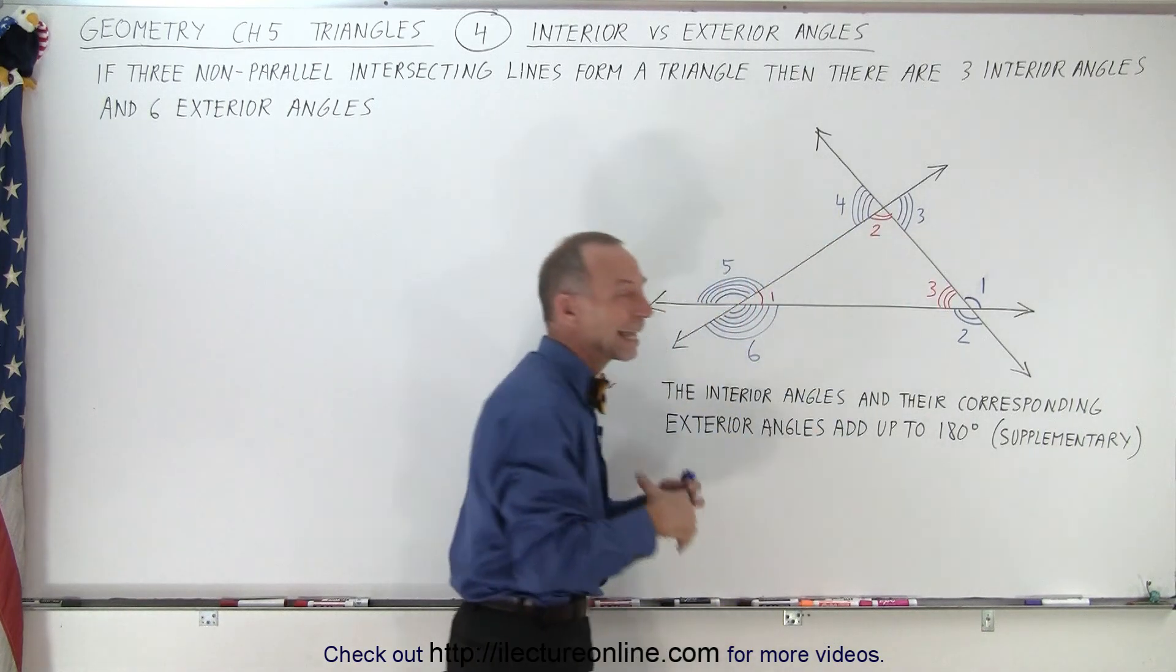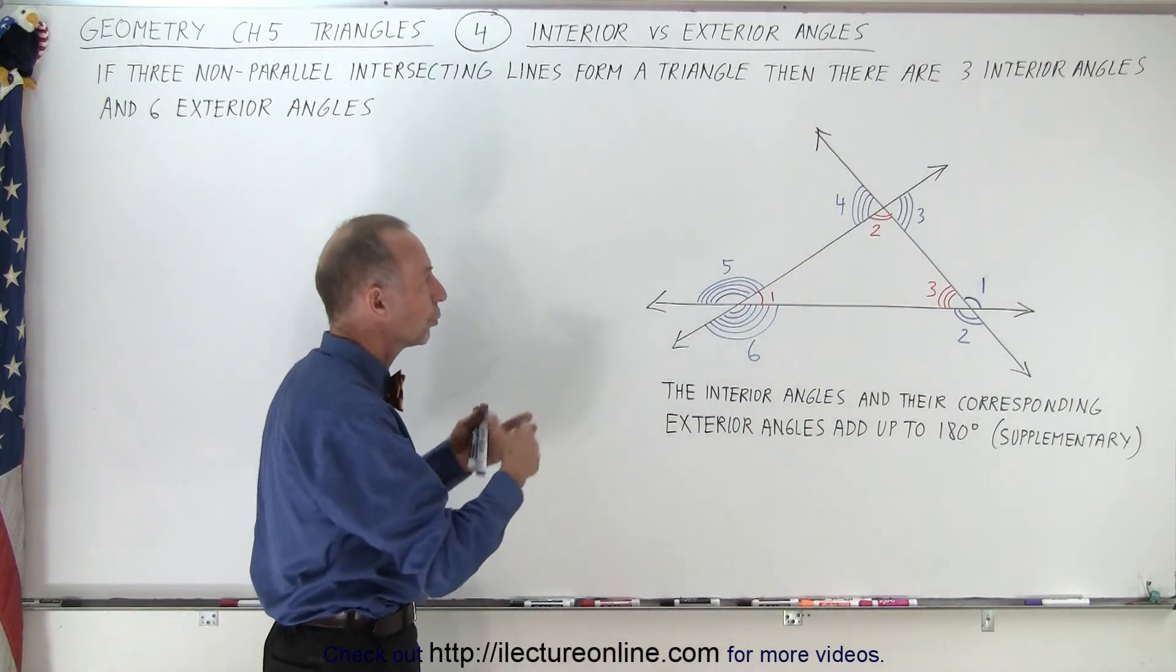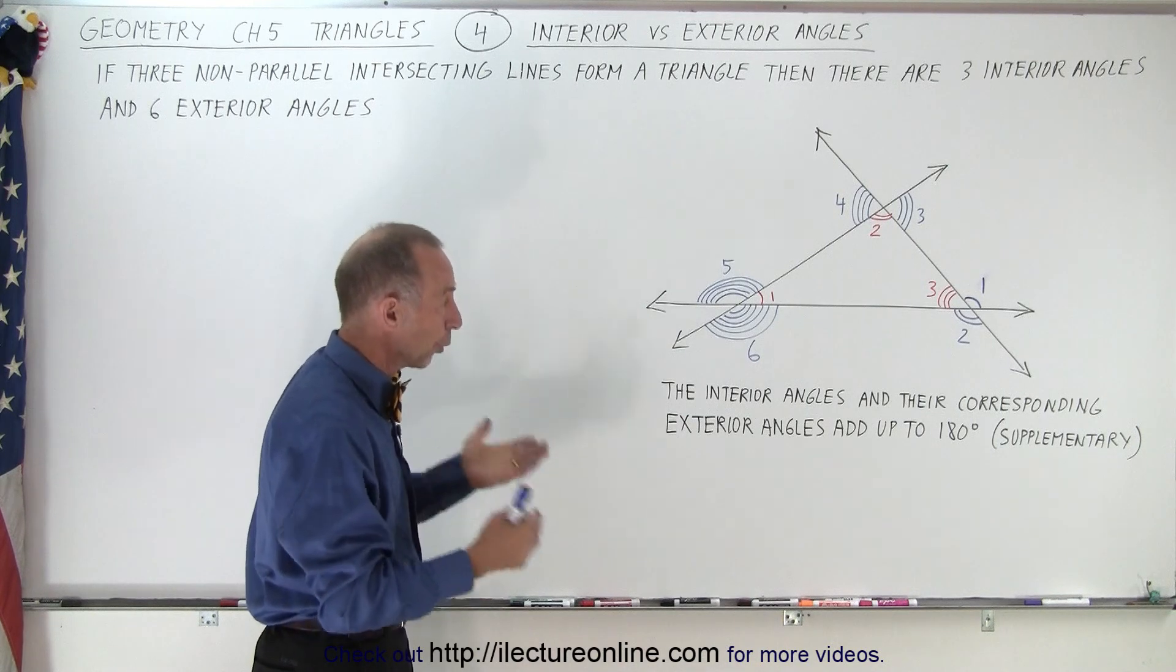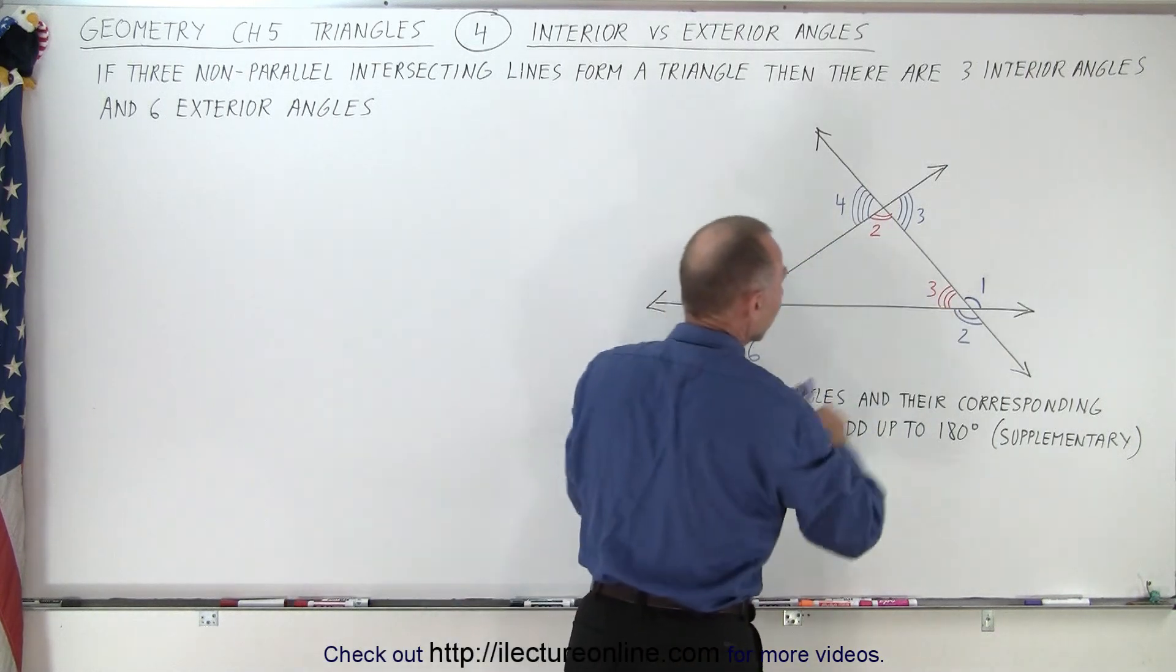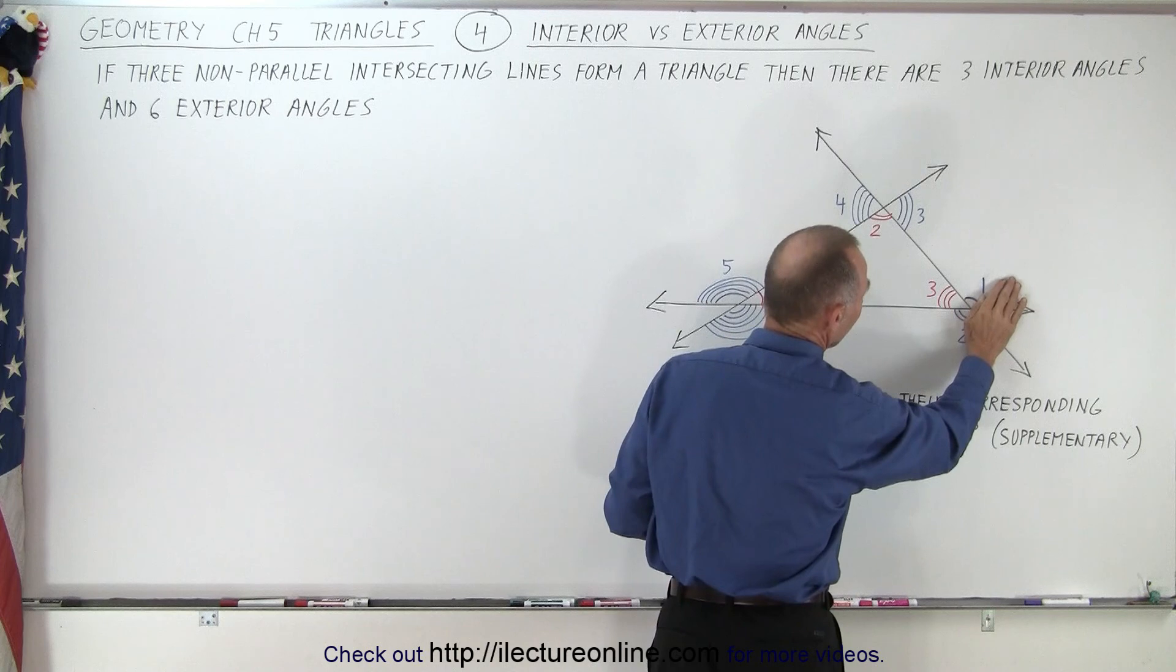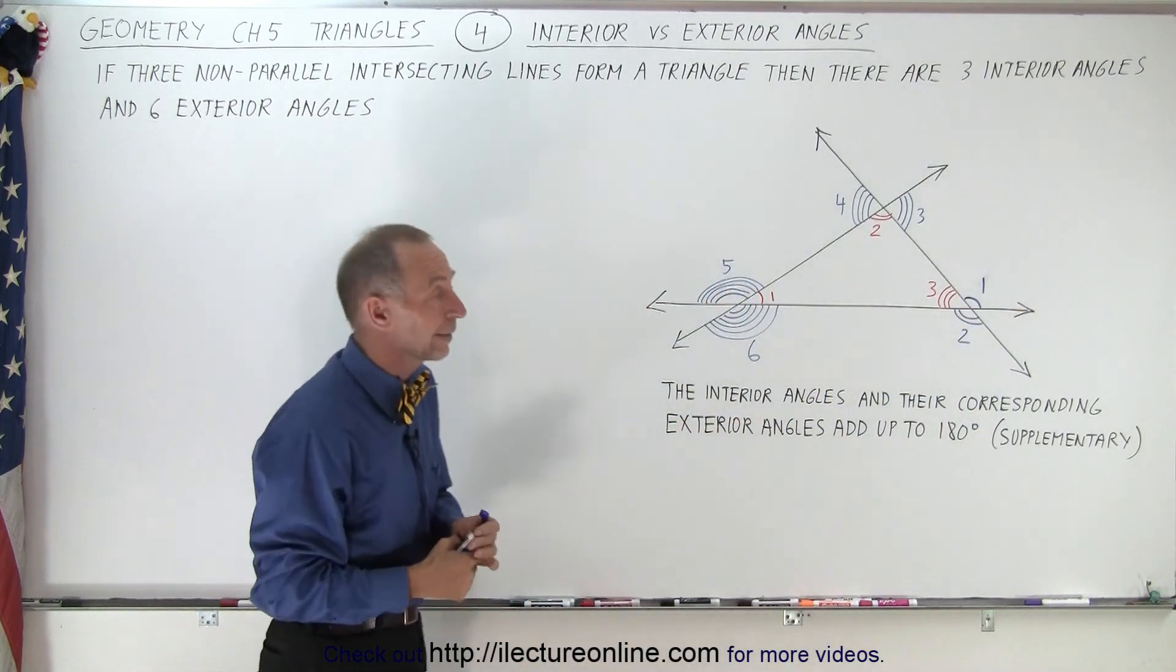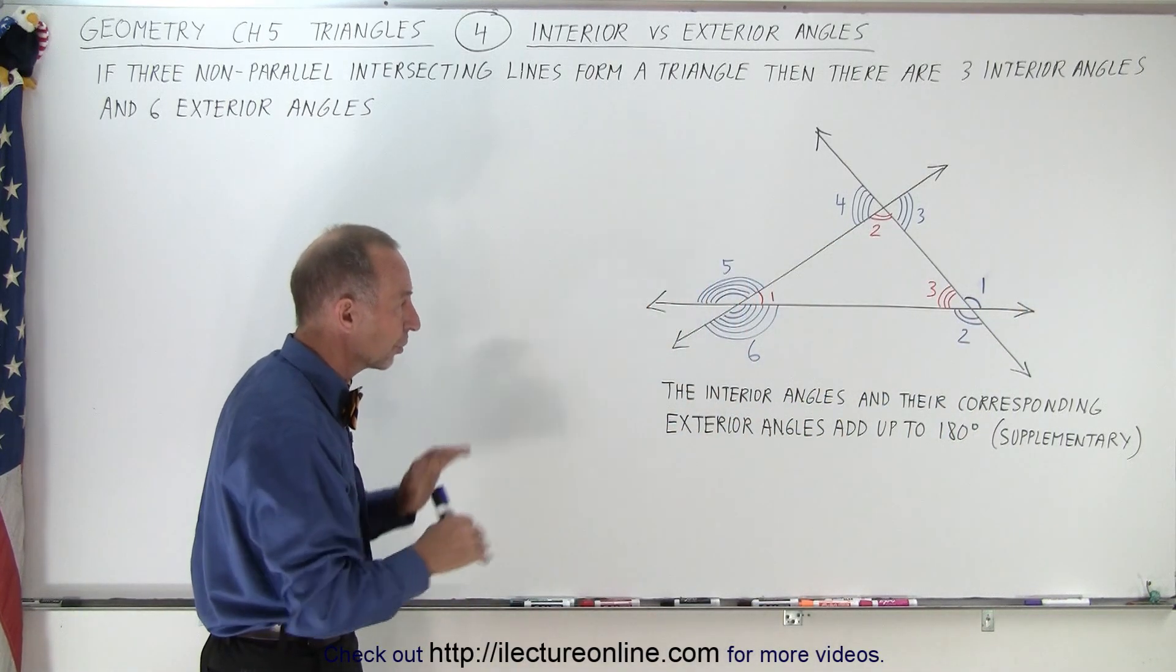That makes those six angles exterior angles to that particular triangle, but only because the lines extend. If those two lines did not extend past this point, of course, we would not be talking about any external angles.